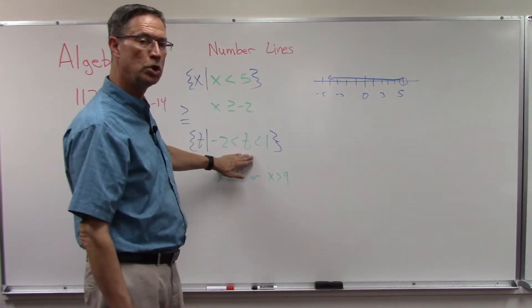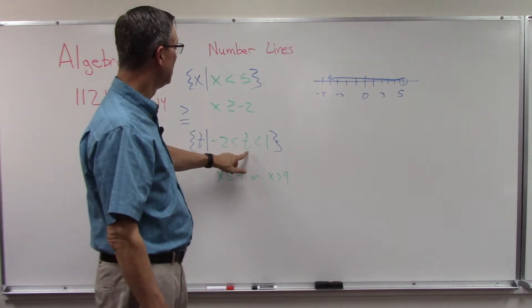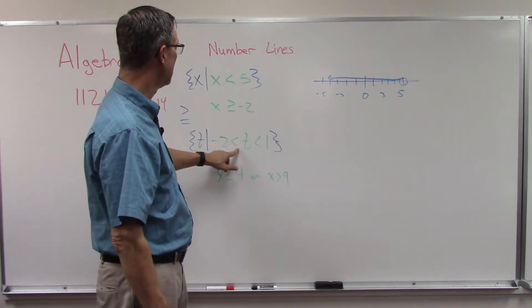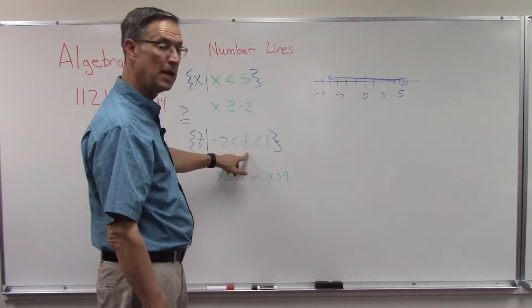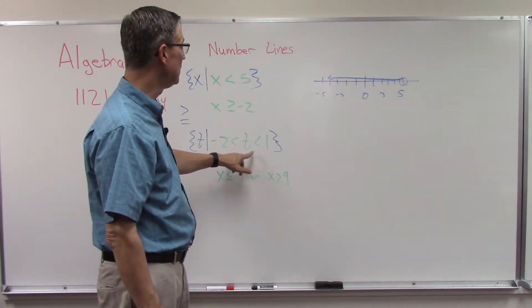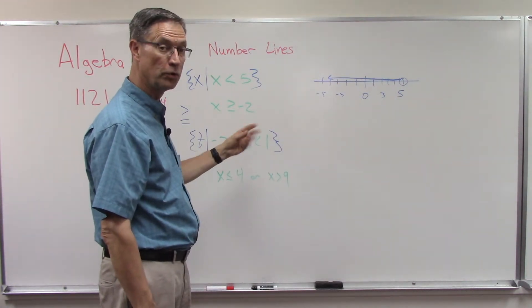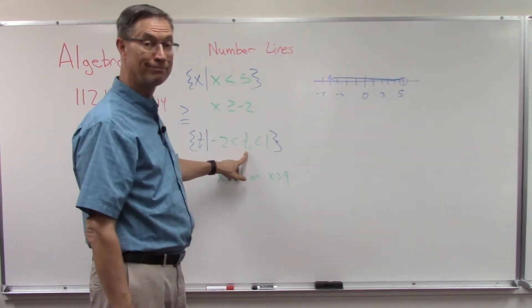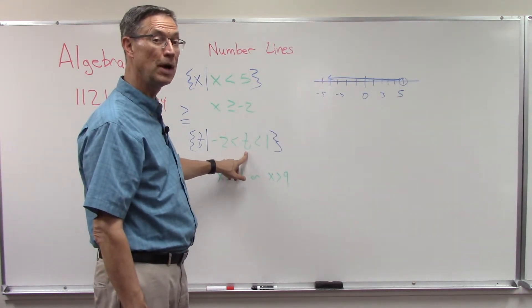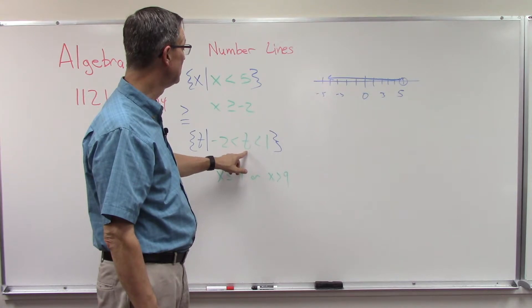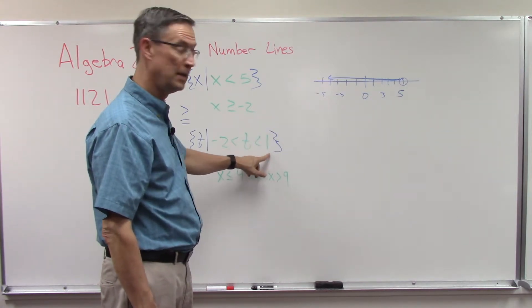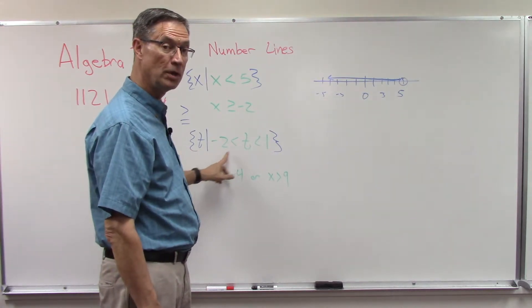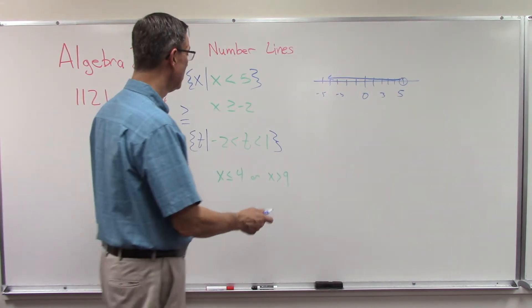This means it's meeting two conditions at the same time. t has to at the same time be greater than negative 2, and it has to also be less than 1 - both conditions. Now the way this is drawn lends itself very easily to graphing it, because what this means is t is between these two numbers. Negative 2 is the smallest, 1 is the largest, and it lies between those two.